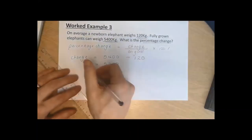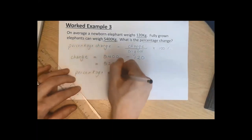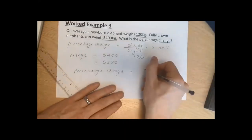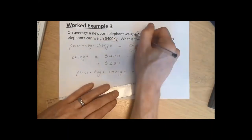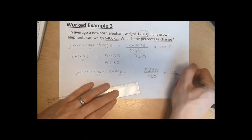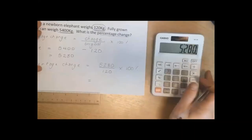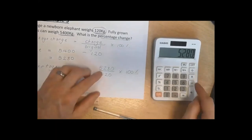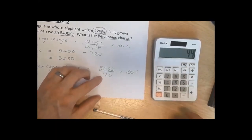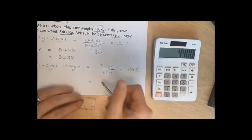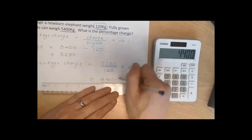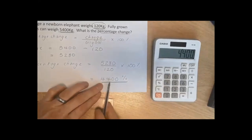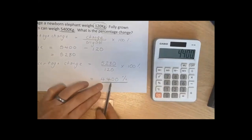Putting that into the equation: percentage change equals 5,280 divided by the original number 120, times by 100. On the calculator: 5,280 divided by 120, press equals, then times by 100 equals 4,400 percent. Do not panic — some people will look at that number and think it's wrong, but you can have bigger than 100 when it comes to percentage increase.